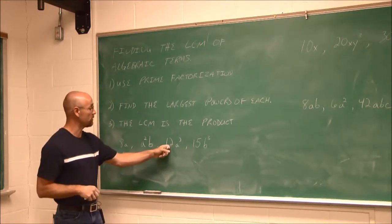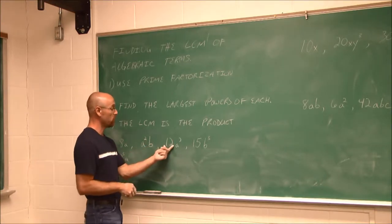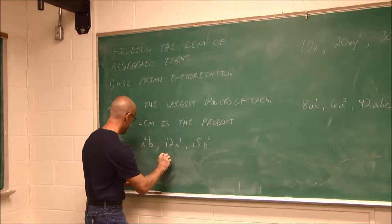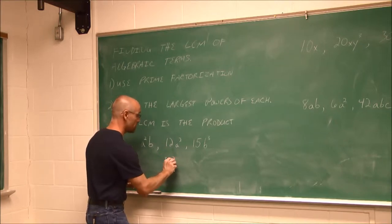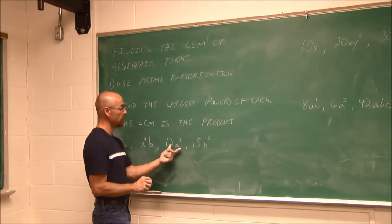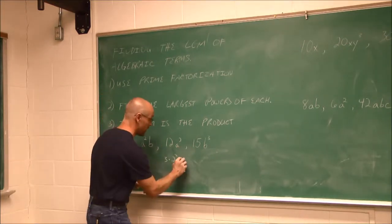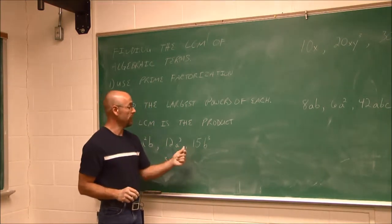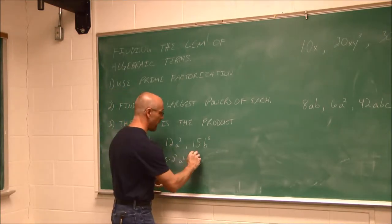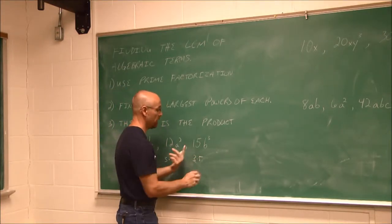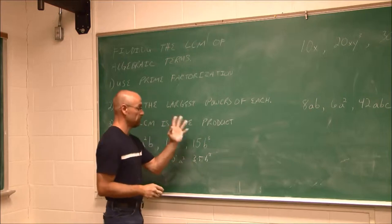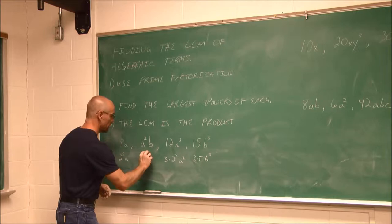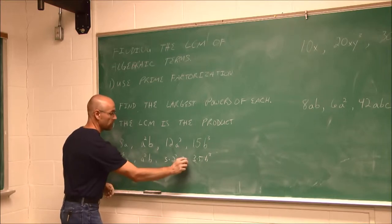If we look at this one, I have 12a². Well, 12 is 3 times 4, and 4 is 2 times 2. So this is 3 times 2² times a². Well, a² is just a times a or a². 15 is 3 times 5, and b³ is what it is. It's 3 factors of b.